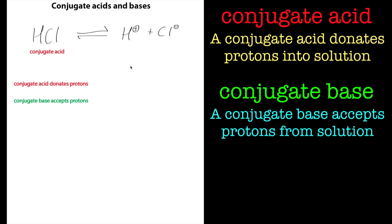It's pretty straightforward so far. If a conjugate base accepts protons — remember this is in equilibrium, so we could have written it the other way around — then this must be a conjugate base. Because this can accept protons, and you can see it's got a proton there if we go in this direction. So chloride can accept protons, making it a conjugate base.